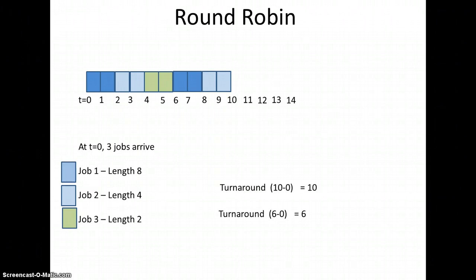So then it'll do two more cycles on job one. It's still not done. Two more cycles on job one. Now job one is finished. So the fourteen plus the ten plus six is thirty, and the average turnaround time is ten.